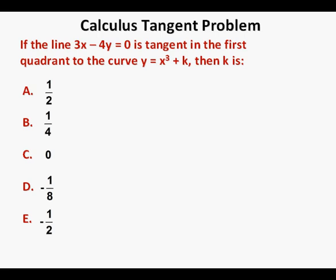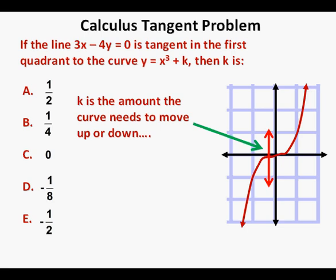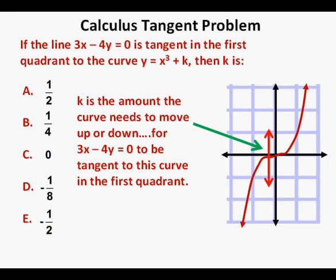Let's first conceptualize this problem. This is the function y equals x cubed graphed on a coordinate plane. The value k is the amount this curve needs to move up or down in order for the line 3x minus 4y equals 0 to be tangent to this curve in the first quadrant, or upper right quadrant of the coordinate plane.